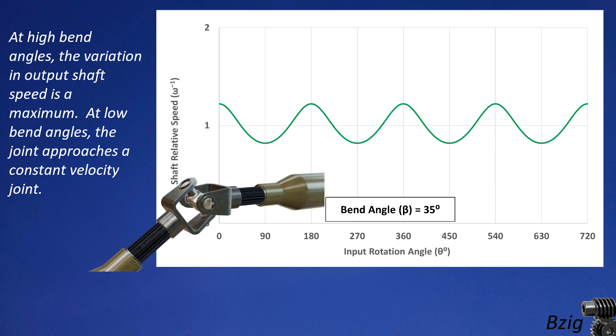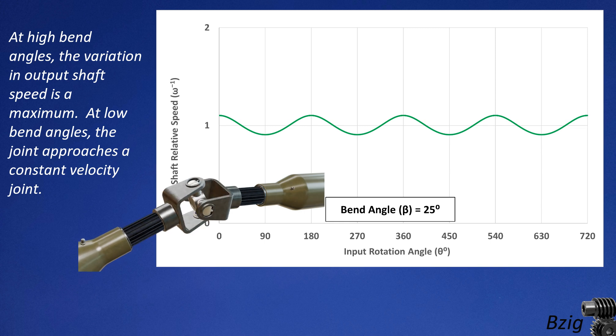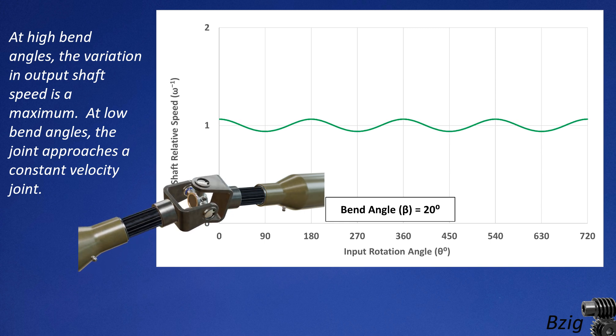At high bend angles, the rotation appears like a square wave with jerky motion of the output shaft. At intermediate bend angles, the motion smooths out and approaches a sine wave.